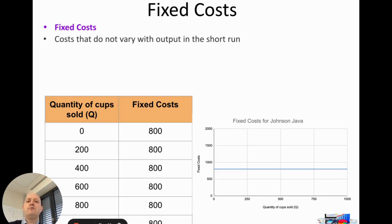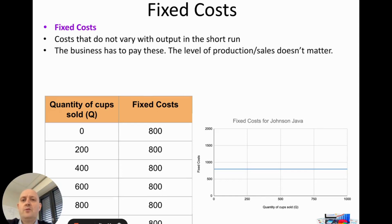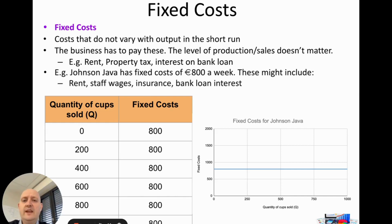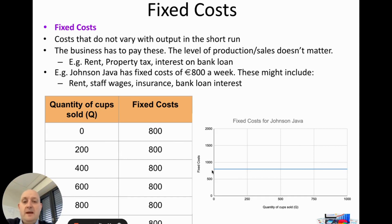To illustrate this with a table: fixed costs don't vary with output regardless of production level. For Johnson Java, our example from the previous video, fixed costs are €800 per week — this could include rent, staff wages, insurance, and bank loan interest. On a diagram, this is simply a horizontal line at 800 that doesn't go up or down as production increases.